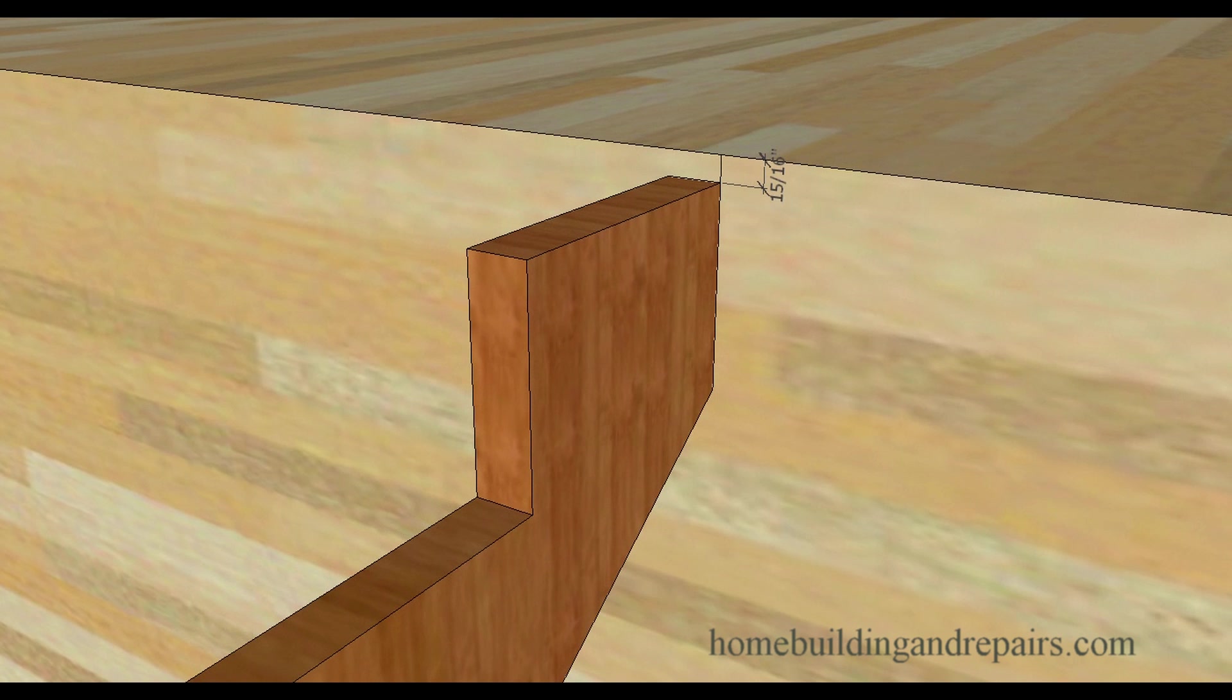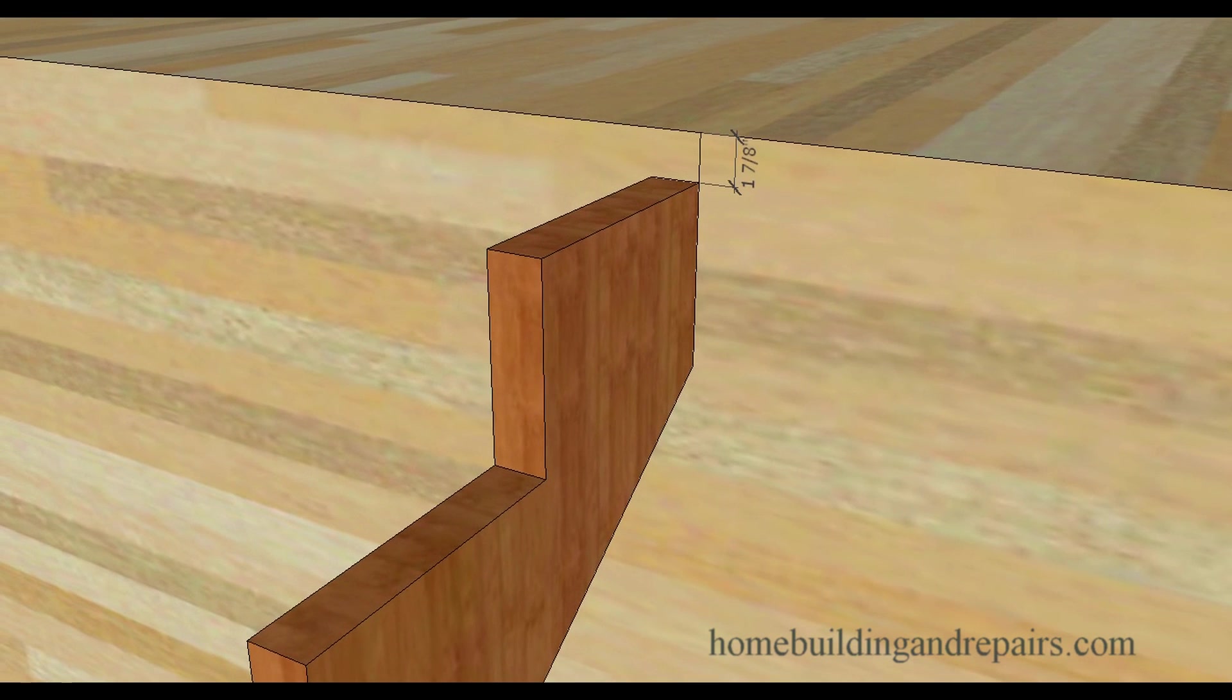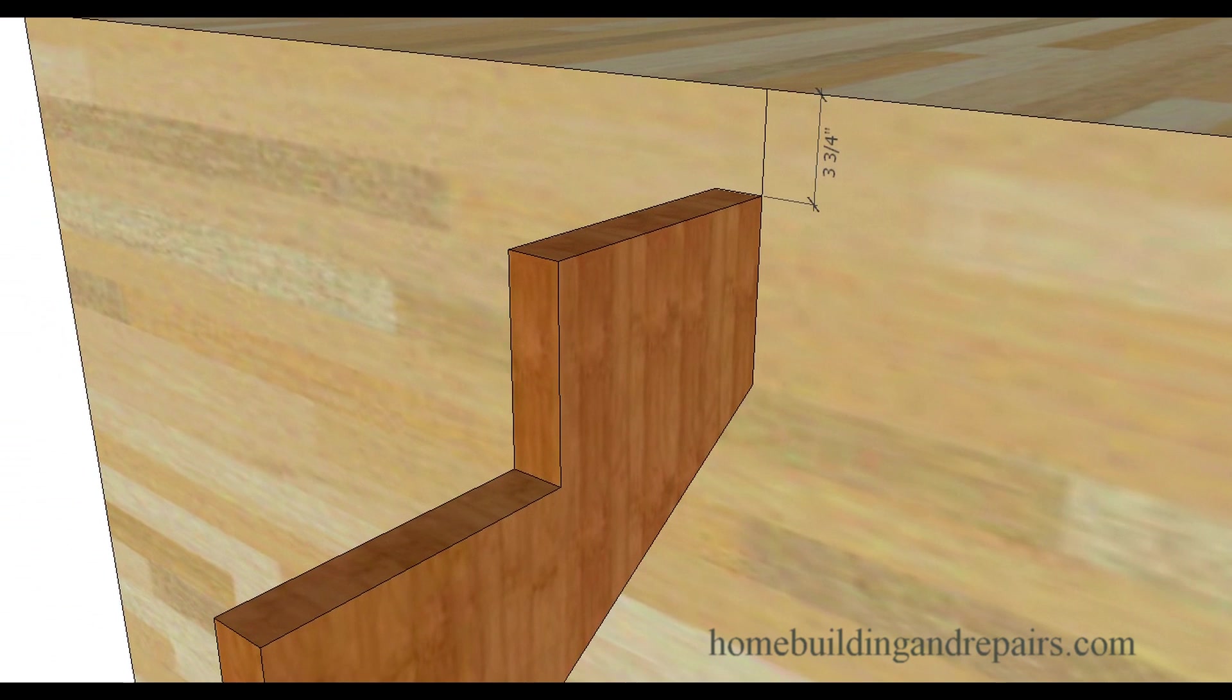This one here is 15/16 lower. Remember, 1/16 of an inch per riser, fifteen risers is going to give us 15/16 of an inch offset. This one here is an inch and 7/8, and the 7 and a quarter inch rise gives us 3 and 3/4. This is one we're going to focus on in our example to make my point.